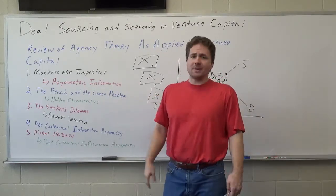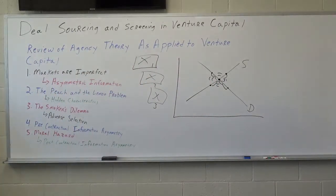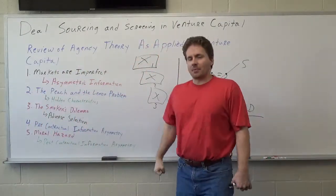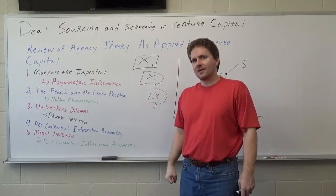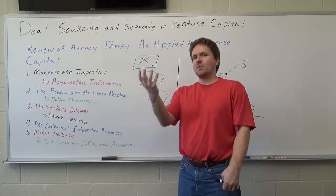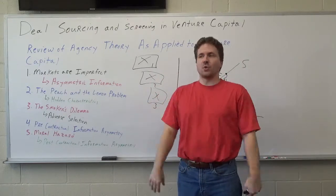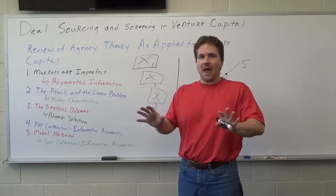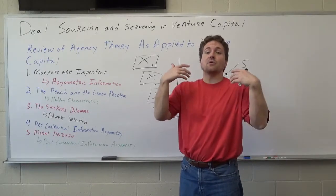We also call this the peach and the lemon problem. This refers to cars — when you buy a used car, the person selling it to you may be selling you a lemon. They may withhold negative information so that you're inclined to buy. You might see a beautiful car that smells great, but the engine is totally bad. The seller may hide that information in order to make the sale — so they're selling you a lemon, a bad car.